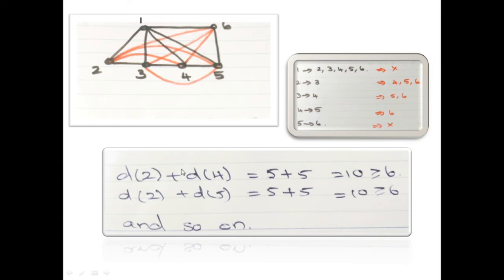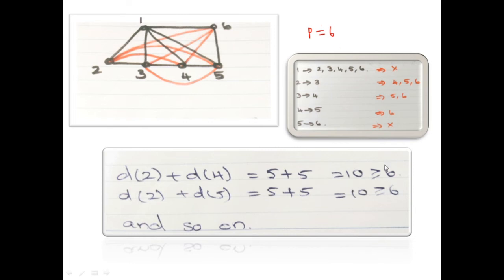As per the definition of closure, repeatedly joining the pair of non-adjacent vertices whose degree sum is at least p — where p is the number of vertices, so here p equals six. Now vertex one is non-adjacent to nobody since it is already adjacent to all. For two adjacent to four: degree of two is five, degree of four is three, so degree sum equals ten, which is greater than or equal to six. Similarly you have to check d(2,5), d(2,6), d(3,5), d(3,6), and everything — they will all be at least p. Hence we can see that this is the closure of the previous graph.